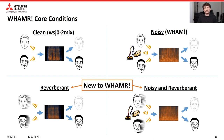As a result, we've defined four core separation conditions of the WHAMR dataset. In all cases, the targets are the same — namely clean, anechoic sources — allowing for fair comparisons across conditions. The first is the clean condition, with neither noise nor reverberation, equivalent to the original Wall Street Journal mixture dataset. The noisy condition is equivalent to the WHAM dataset. The reverberant condition is the Wall Street Journal mixtures with reverberation added. Finally, the noisy and reverberant condition has both noise and reverberation added.